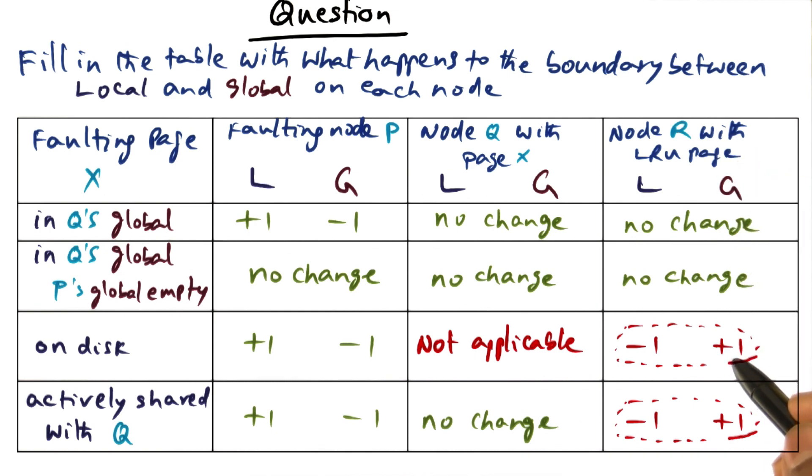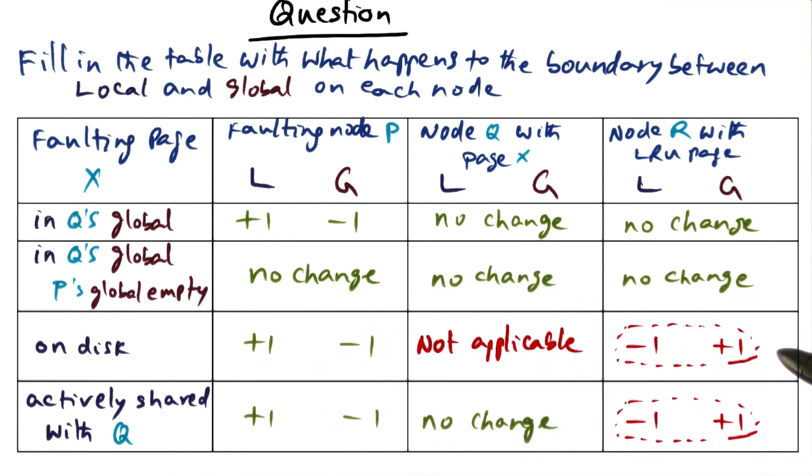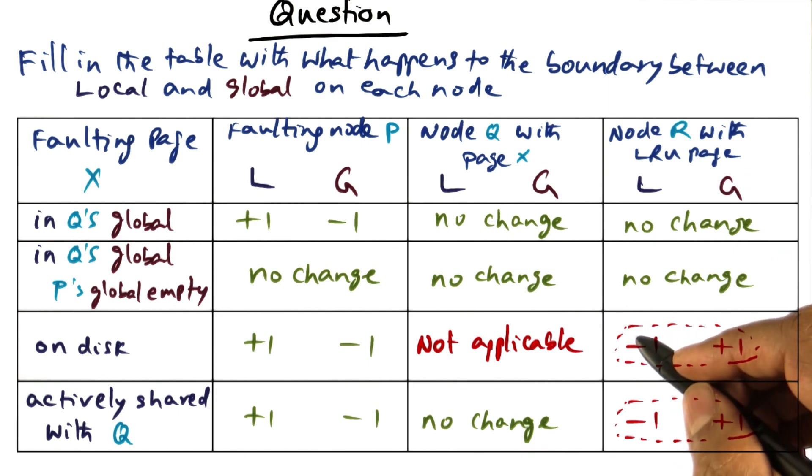But what is going to happen on this node? Well, it really depends on whether the LRU page comes from the global part or the local part. If it comes from the global part, then there is no change on R because you're basically throwing this into the global part and he's throwing one of those global pages out onto the disk.